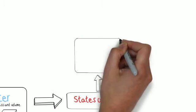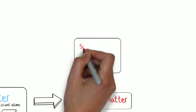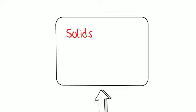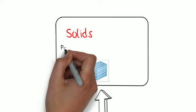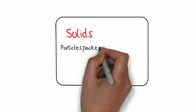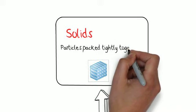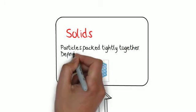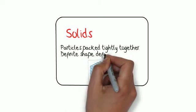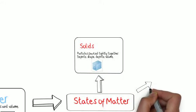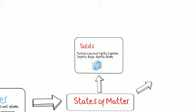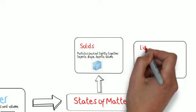And we're going to start off with the states of matter. You should know three states of matter. There are actually four, but you should know three. The first of which is solids. And solids are particles that are packed tightly together. And what that means is that they're going to have a definite shape and a definite volume. They're not going to be able to change shapes and their volume is not going to change.